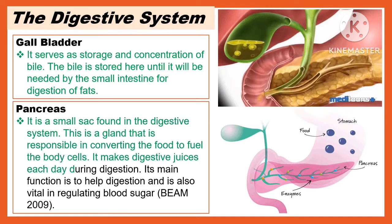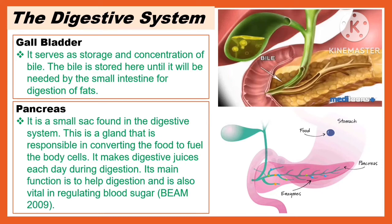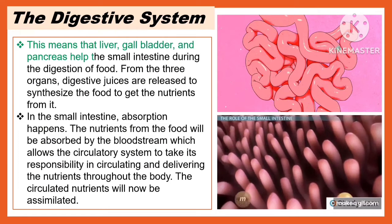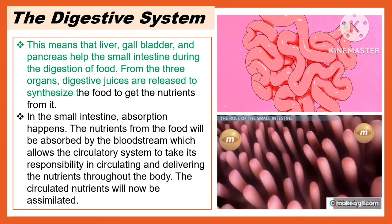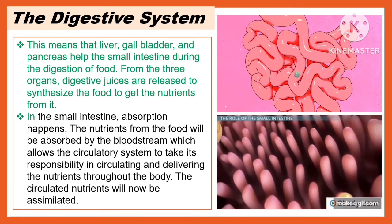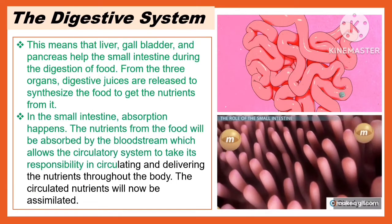Another part of the digestive system is the pancreas. It is a gland responsible in converting the food to fuel the body cells. It makes digestive juices each day during digestion. Its main function is to help digestion and it is also vital in regulating blood sugar. This means that the liver, gallbladder, and pancreas help the small intestine during the digestion of food.